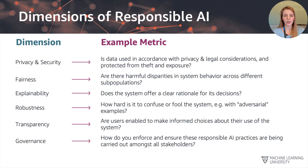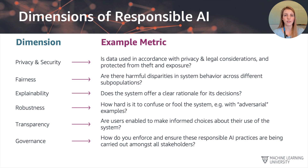We have different dimensions of responsible AI along with some example metrics to illustrate them in more detail. The first dimension, related to the trustworthiness aspect in the definition, is privacy and security. This is about whether the data is used in accordance with privacy and legal considerations and is protected from theft and exposure — basically, do the right people have access to the data and do we prevent it from being shared more widely than is necessary or legal.